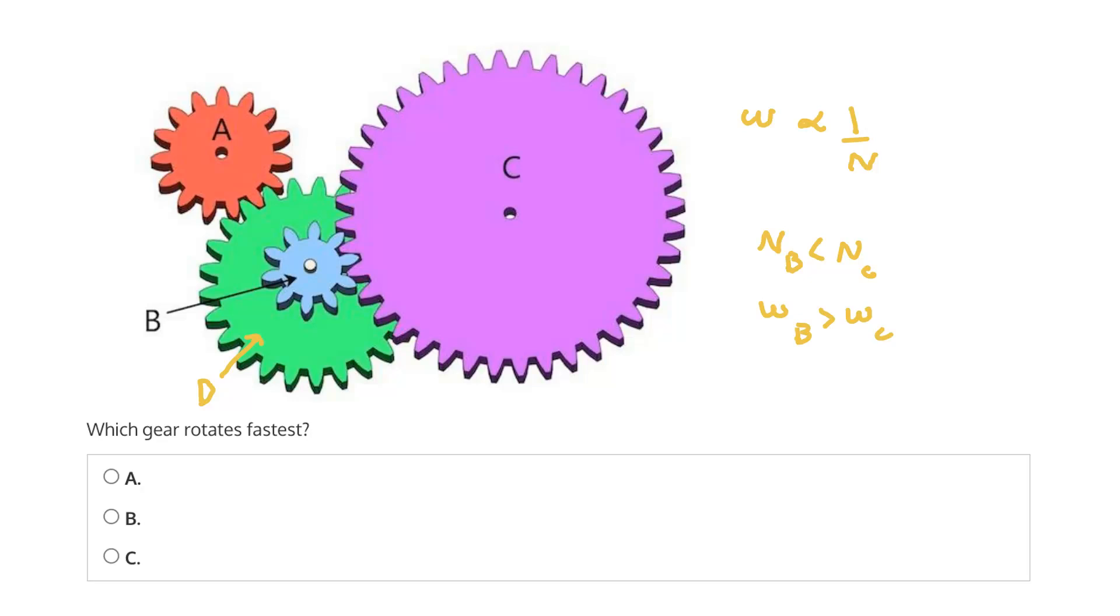Now let's remember, we know B and D are traveling at the same speed, and we said that A is traveling faster than B and D. So if C is traveling slower than B, then we know that A is rotating with the highest speed, and therefore the correct answer is A.